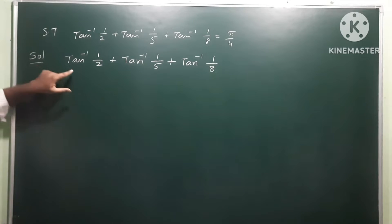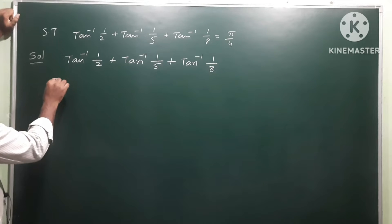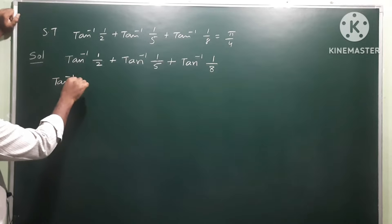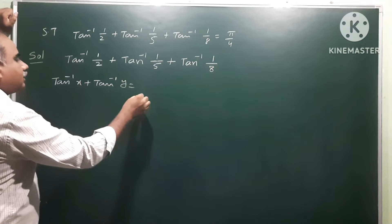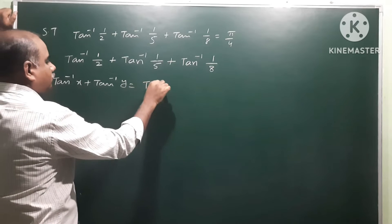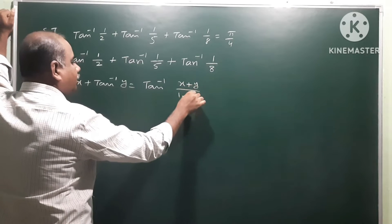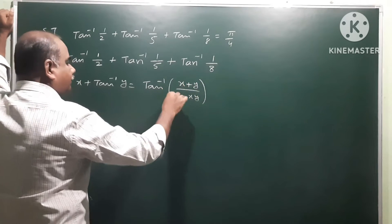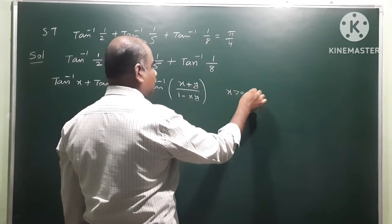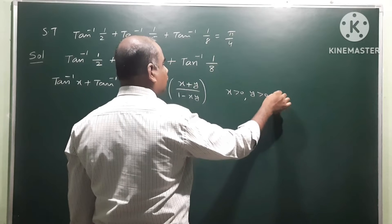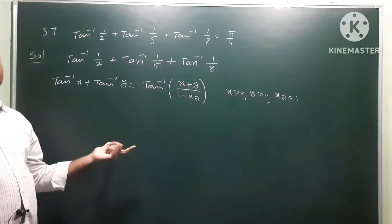Now we apply the tan inverse addition formula. The formula is: tan inverse x plus tan inverse y is equal to tan inverse of (x plus y) divided by (1 minus xy). The conditions are x greater than 0, y greater than 0, and xy less than 1.